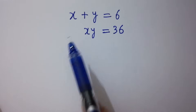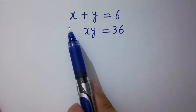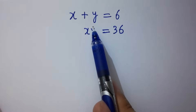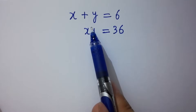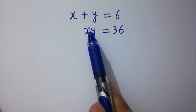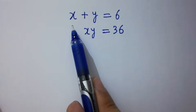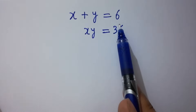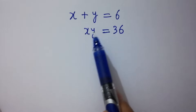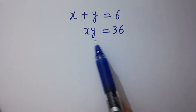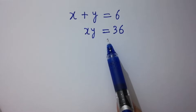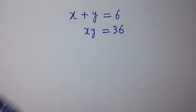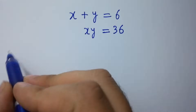Hello friends. How to solve for x and y in this problem, where x plus y equals 6 and x times y equals 36. Let's have a solution.